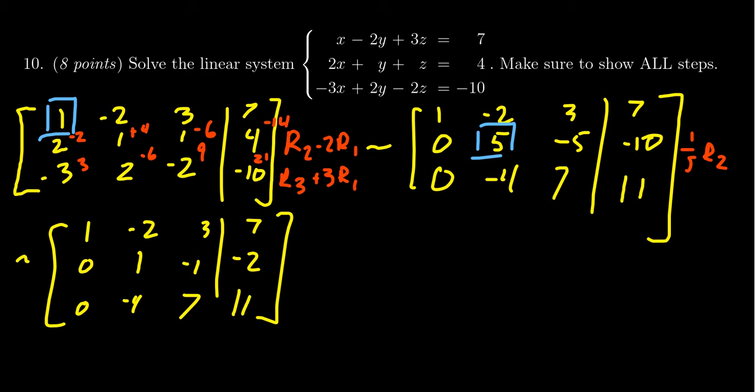And so again, still with my pivot in the 2,2 spot, I want to get rid of the -4 that's below. So I'm going to take row 3 and add to it 4 times row 2. This will give us plus 4, minus 4, and minus 8.